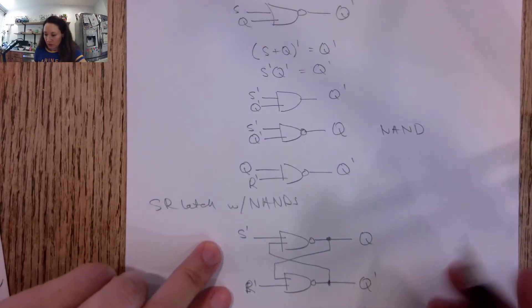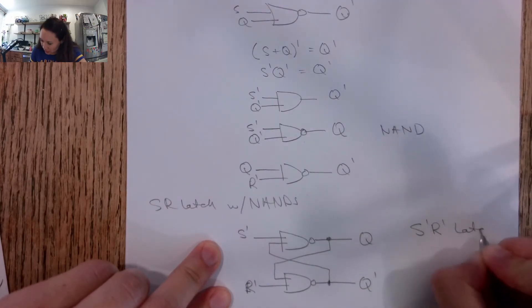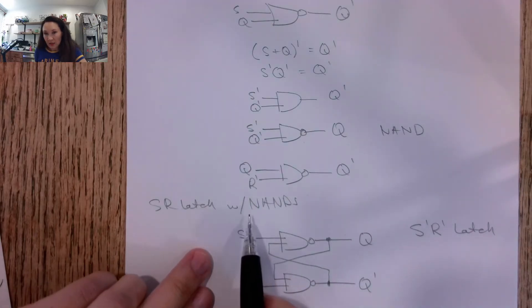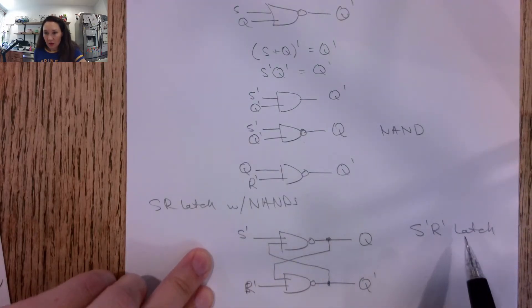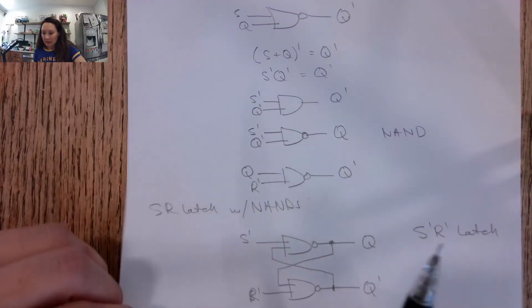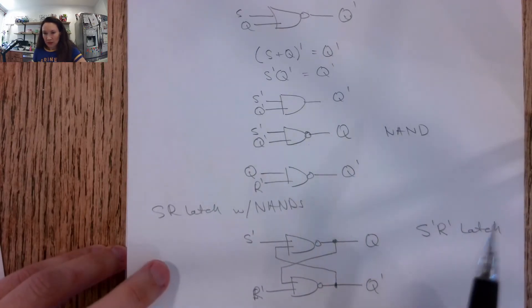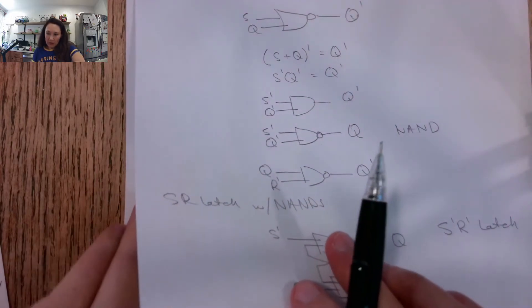This is often referred to as an S naught R naught latch. So if you make an SR latch with NANDs, then it kind of becomes this S naught R naught latch. And the reason why it has a different name, even though logically it's equivalent, is because these inputs get switched. So let me show you the truth table for this.